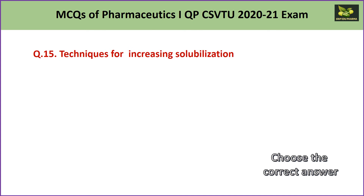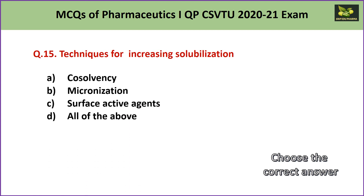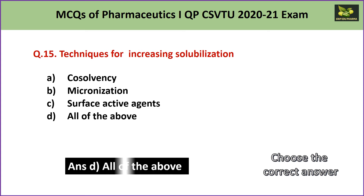Question number 15: Techniques for increasing solubilization are A. cosolvency, B. micronization, C. surface active agents, or D. all of the above. All three methods are techniques for increasing solubility. So the answer is D — all of the above.